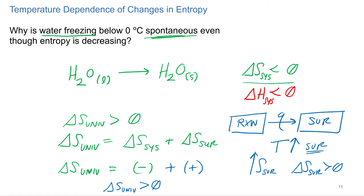So that's how enthalpy impacts entropy. If the reaction is exothermic, it's going to cause the temperature of the surroundings to go up, increasing the entropy of the surroundings. What would happen if the reaction is endothermic? It's going to absorb heat from the surroundings. The surroundings will transfer heat to the system. The temperature of the surroundings is going to go down, so the entropy of the surroundings is going to go down. That's how enthalpy impacts the entropy of the surroundings — increasing it if exothermic, decreasing it if endothermic.